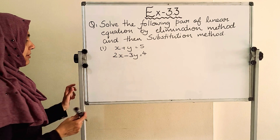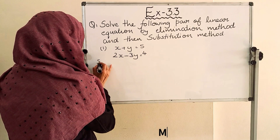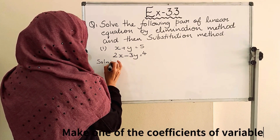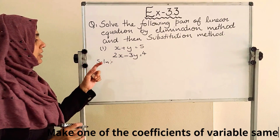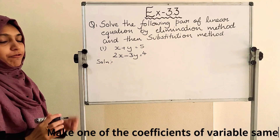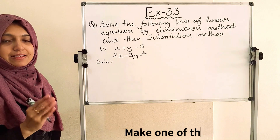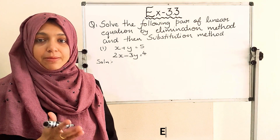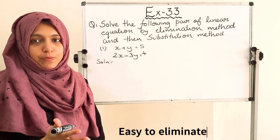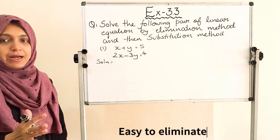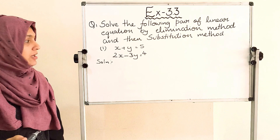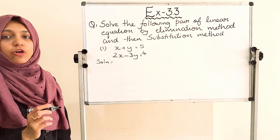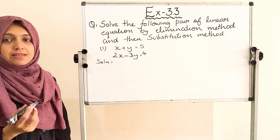Now, elimination method — how to solve it? First, we have to make the coefficient of one variable the same. While subtracting or adding, we can cancel the variable if the coefficient is same.